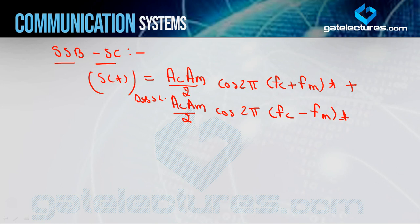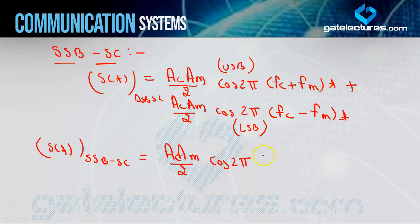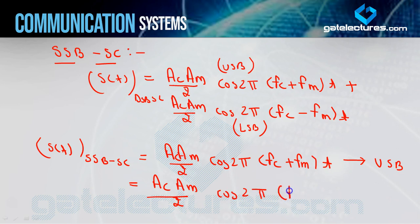SSB-SC ka naam hai single sideband with suppressed carrier — aapko upper ya lower mein se ek hi sideband send karni hai, dono nahi. Toh agar mein upper sideband send kar raha hun, toh equation hoga: Ac·Am/2 · cos(2π(fc+fm)t). Aur agar lower sideband transmit kar raha hun, toh: Ac·Am/2 · cos(2π(fc−fm)t). Generalized form mein: s_SSB-SC(t) = Ac·Am/2 · cos(2π(fc ± fm)t). Plus means upper sideband, minus means lower sideband.